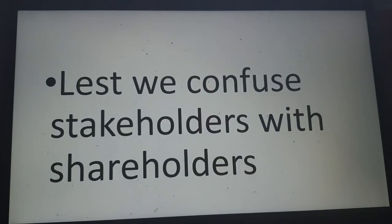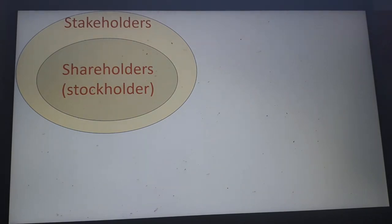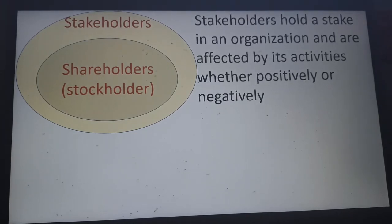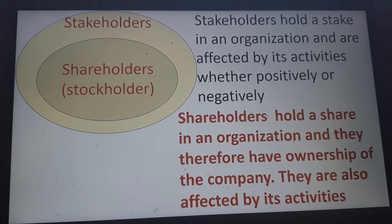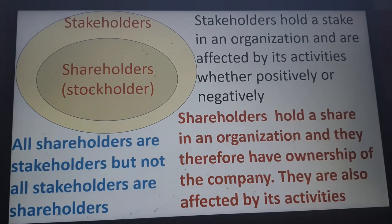Let's not confuse stakeholders with shareholders. Stakeholders is the larger circle — those who hold a stake in an organization and are affected by its activities, whether positively or negatively. Shareholders, also called stockholders, are the smaller circle — they hold a share and have ownership of the company. All shareholders are stakeholders, but not all stakeholders are shareholders.